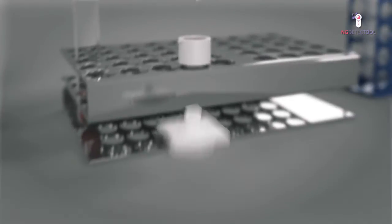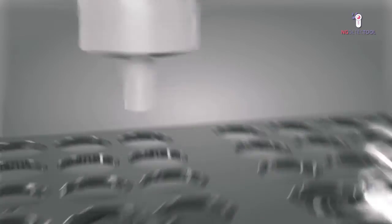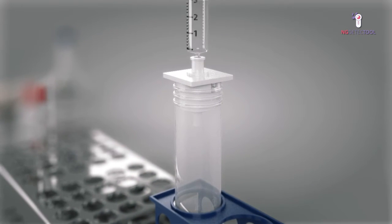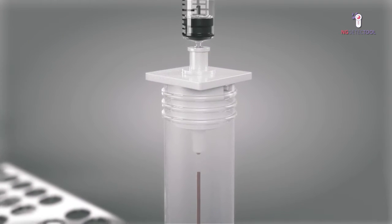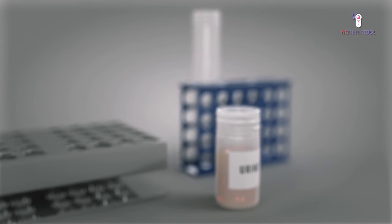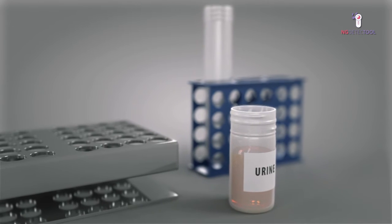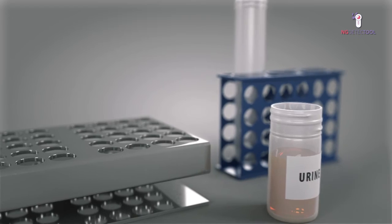Close the filtration system with the upper part and push the sample through the filter using a syringe full of air until bubbles appear. When working with a positive urine sample, the test is performed directly from the primary sample.